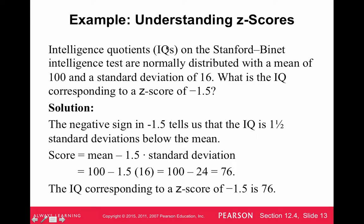IQs on the Stanford-Binet intelligence test are normally distributed with a mean of 100 and a standard deviation of 16. What is the IQ score corresponding to a Z-score of negative 1.5? The negative sign tells us the IQ is one and a half standard deviations below the mean. We take 1.5 times 16, which is 24, and subtract it from 100, giving us 76. So the IQ score corresponding to a Z-score of negative 1.5 is 76.